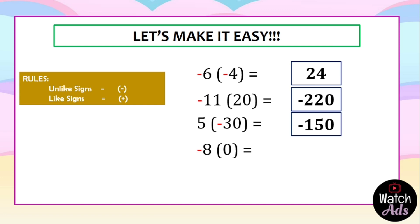For our fourth example: negative 8 multiplied by 0. Any number multiplied by 0, the answer is 0.